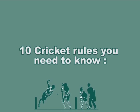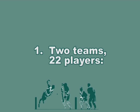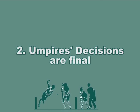Here are 10 cricket rules you need to know. One: Two teams, 22 players. Each team has 11 players on the field, one of whom is the team captain. The captain is responsible for ensuring that the team has no more than 11 players on the field at any given time. Two: Umpire's decisions are final. The umpire is the final authority in taking decisions. Players who fail to follow directions or who argue against the umpire's decisions may be turned over to the team captain for dismissal or other disciplinary action.